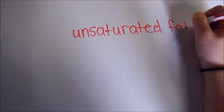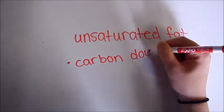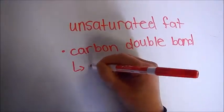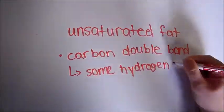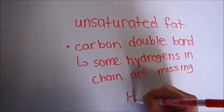The second type of fat is unsaturated. There are actually two types: monounsaturated and polyunsaturated. But they are both similar in that all unsaturated fats include at least one carbon double bond.